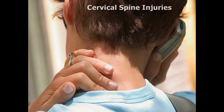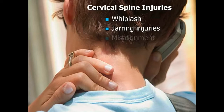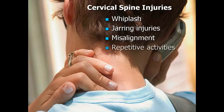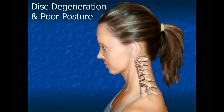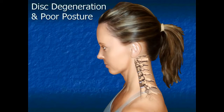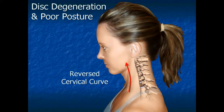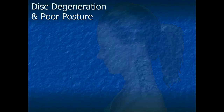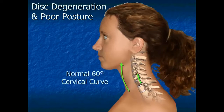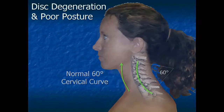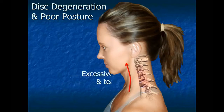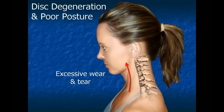Injuries to the cervical spine caused by whiplash, jarring injuries to the neck, misalignment, or repetitive activities can increase the onset of disc degeneration. Most cases of disc degeneration involve poor posture of the head and upper torso. When the head is protruded forward in front of the body, it often results in the cervical spine developing a reversed curve posture. The normal cervical spine should have a 60-degree arc in the neck with the head positioned squarely above the shoulders. If the head juts forward in front of the shoulders, it causes excessive wear and tear on the discs in the neck.